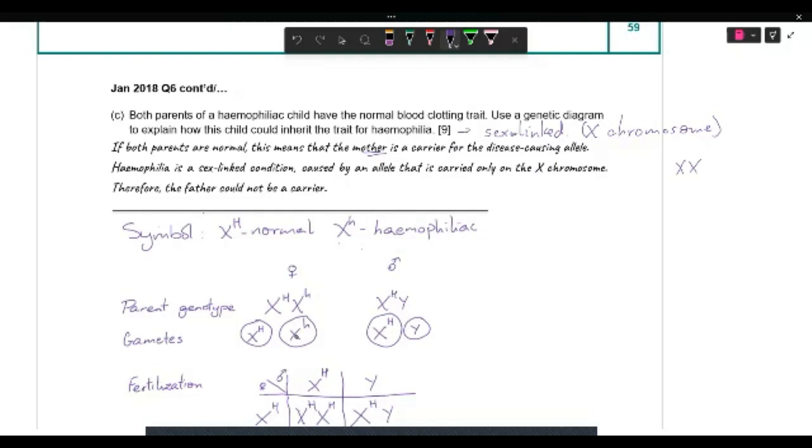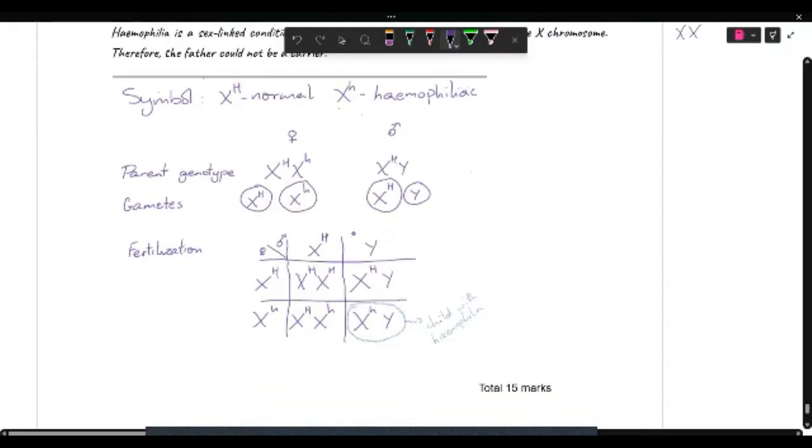And that can then be carried, inherited by the child. So as you can see here, if both parents are normal, this means that the mother is a carrier for the disease-causing allele. And we indicate that hemophilia is a sex-linked condition. Carried only on the X chromosome. Therefore, the father could not be a carrier. And of course, the allele is normal. So he has the normal allele.